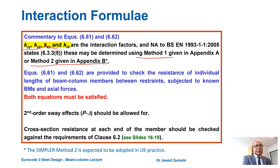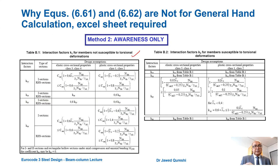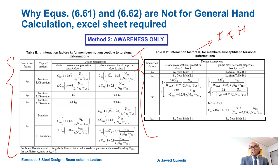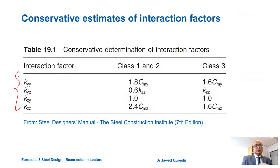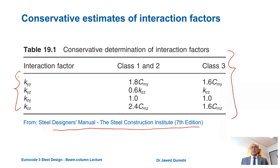Method 2 is the most common one used in the UK, and both equations must be satisfied. The cross section resistance of each section should also be checked. The first table is for tubular sections and the second is for I and H sections; from these tables the interaction factors are derived. These factors cannot be determined using hand calculations — an Excel sheet must be used. Table B3 gives the values of C factors using the moment diagrams; the most common case is uniform distribution of moment. Conservatively, simplified factors from the Steel Designers Manual published by the Steel Construction Institute can be used.